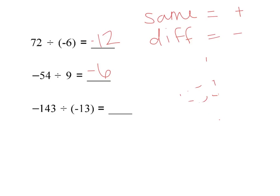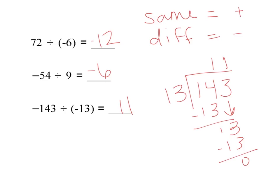And for my last problem, I have negative 143 divided by negative 13. So 143 divided by 13. 13 can't go into 1, but it goes into 14 one time. Subtract that. Bring down my 3. And 13 goes into 13 also one time. And nothing left over again. So I'm getting 11. This time I had a negative divided by a negative, so same signs are giving me a positive 11 for that answer.